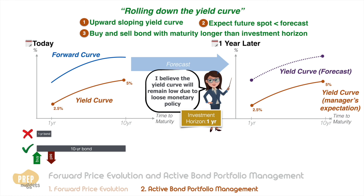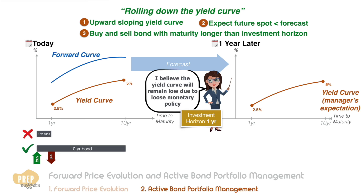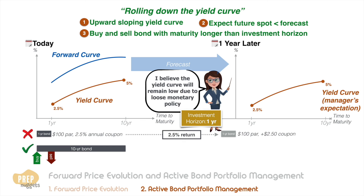For example, if the investment horizon is just one year, the investor can potentially earn a higher return by purchasing a 10-year bond and selling it after one year than to simply buy a one-year bond and hold it until maturity. Let's see how this works. We'll assume that the yield curve remains the same after one year instead of moving up as suggested by the forward curve. First, let us establish the return for a 100 par one-year bond with a 2.5 coupon paid annually. After one year, the return is simply 2.5 percent regardless of yield curve movement, as the bond matures at 100 dollars par.